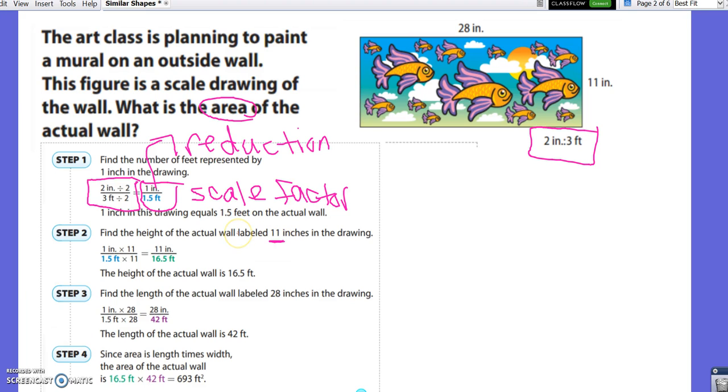The height is 11 inches, so we are going to set up a proportion. We're going to write model over actual, and we want to make sure that we have our units. So we have inches over feet, and we can use our scale that we're given. For every 2 inches on the model is 3 feet on the actual. And we can set it equal to, we're finding height, so it is 11 inches over x. And then we solve our proportion.